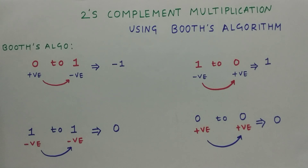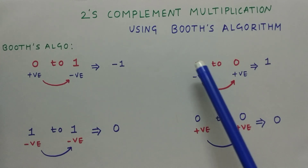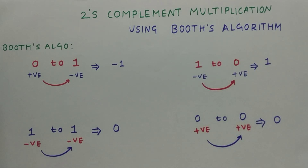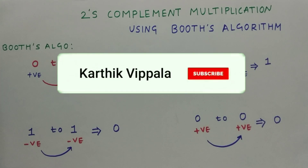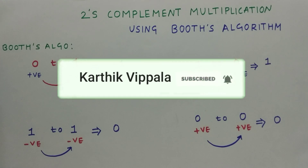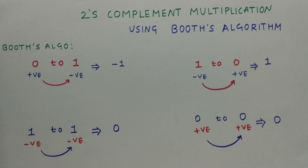Hey guys, welcome back to another interesting topic. Today's topic is on how to multiply signed binary numbers using Booth's algorithm. Before going to the topic, make sure you hit that subscribe button and turn your notifications on, and if you have any doubts, comment down below — I'll respond within 24 hours.